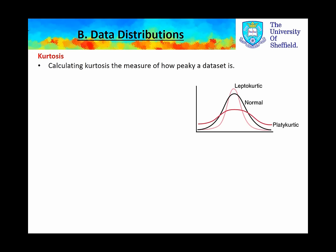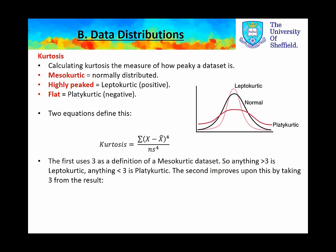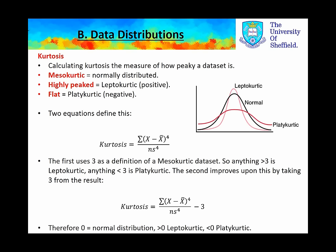We also learned about kurtosis, which is the measure of how peaky a data set is. Mesokurtic refers to a normally distributed data set. Leptokurtic refers to a peaky data set. And platykurtic refers to a flatter data set — peaky is positive and flatter is negative. There are two equations to find this. The first is the sum of each data point minus the mean, all to the power of 4, divided by the standard deviation to the power of 4, times by the sample size. This first equation uses 3 as the definition of a mesokurtic data set, so anything more than 3 is leptokurtic and anything less than 3 is platykurtic. The second equation, which we're going to use today, improves upon this by subtracting 3 from the result — therefore 0 is a normal distribution, more than 0 is leptokurtic, and less than 0 is platykurtic.